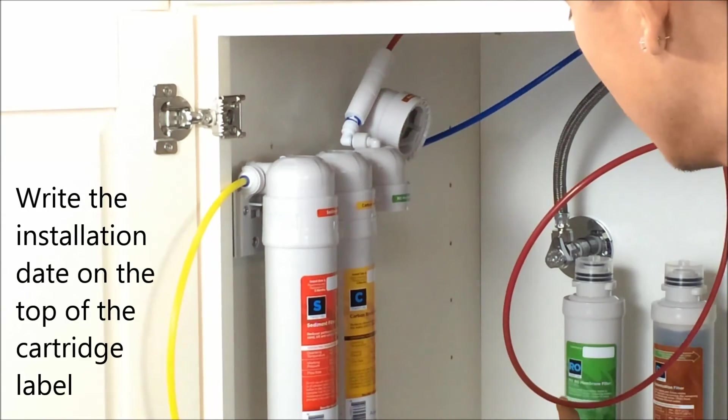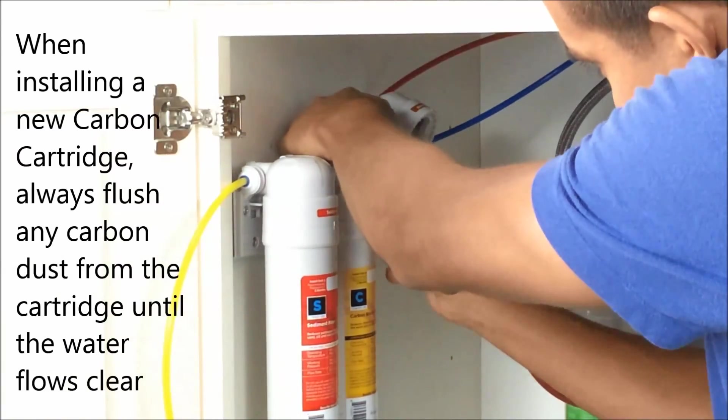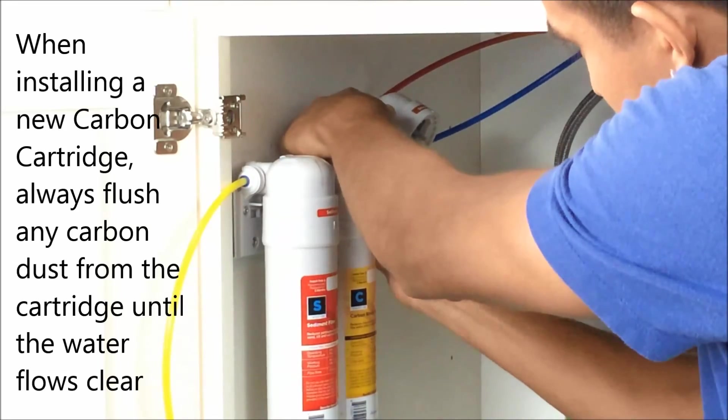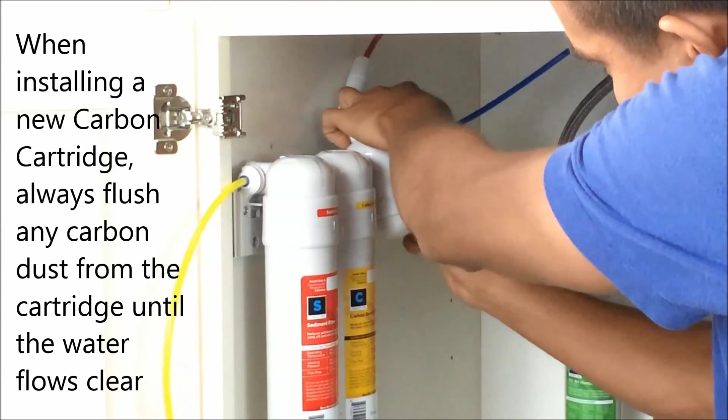The next thing we'll do, instead of putting the membrane, we're going to put this flush cap. This way we can flush the carbon cartridge to get rid of all the debris. We'll do it for the membrane and the deionization.